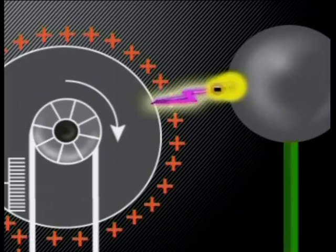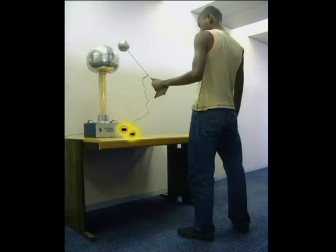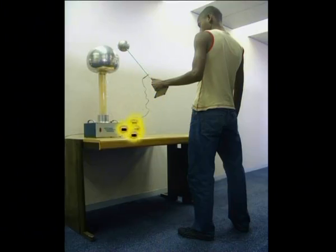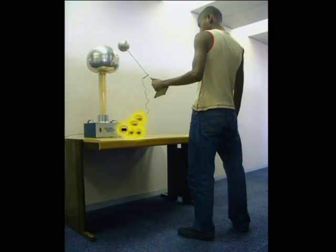When they arrive on the metal dome, they neutralize the large positive charge there. If the Van der Graaf generator is left on, the positive charge builds up on the metal dome again, and there is another electrical discharge, and so it goes on. The reason that electrical discharge can occur again and again is that the metal sphere is connected to the earth. This means that negatively charged electrons can move from the earth onto the metal sphere to replace the ones that have jumped across to the metal dome. There is therefore a continuous supply of electrons.